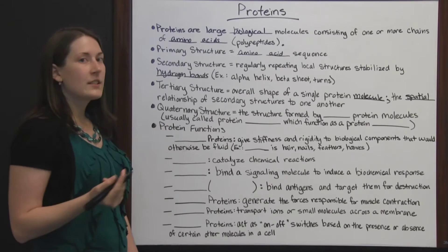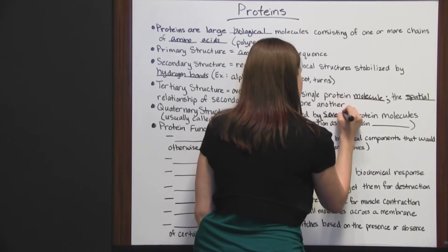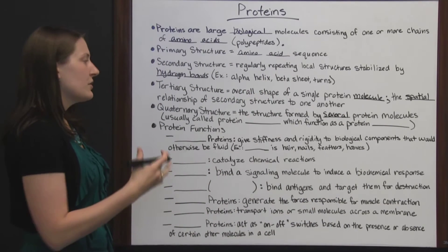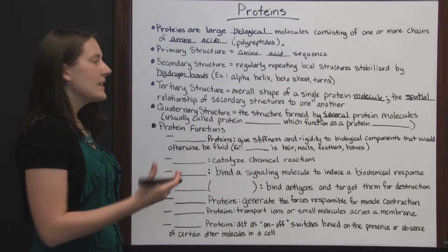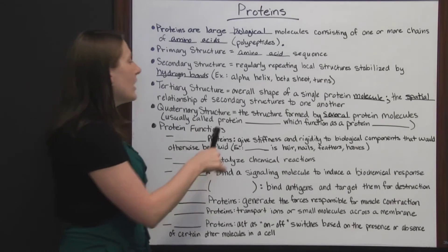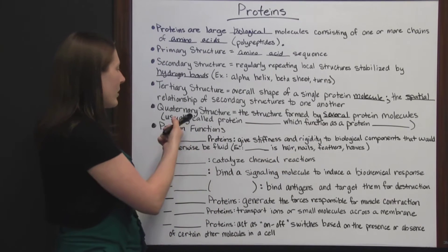The quaternary structure is going to be the structure formed by several protein molecules. You can see how we just keep adding proteins here to get different structures. The more that are added, the more different these structures are going to look because they're getting more complex. Several protein molecules are joined together in the quaternary structure.